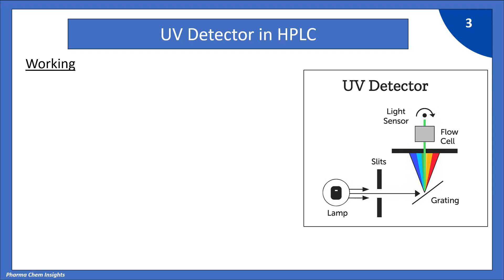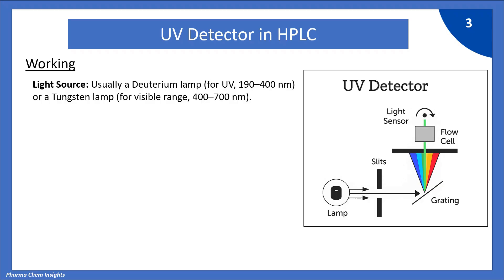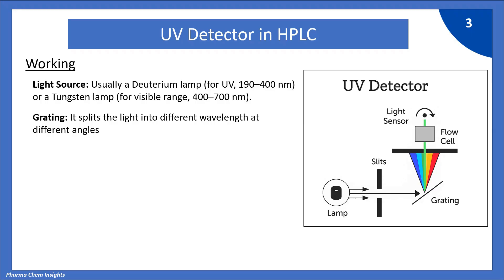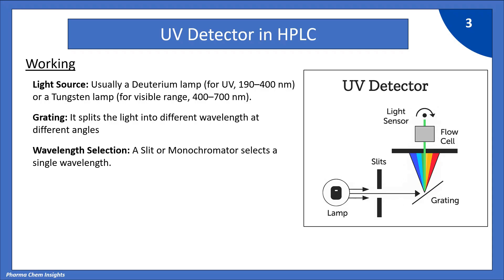Let's see each component one by one. First is the light source — it's usually a deuterium lamp for the UV region 190 to 400 nanometers, or a tungsten lamp for the visible range 400 to 700 nanometers. Light passes through a slit onto a grating, which splits the light into different wavelengths at different angles like a rainbow. The second slit, or monochromator, selects a single wavelength — for example, 273 nanometers — which then passes through into the flow cell.